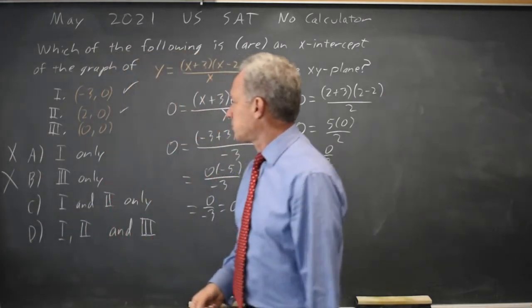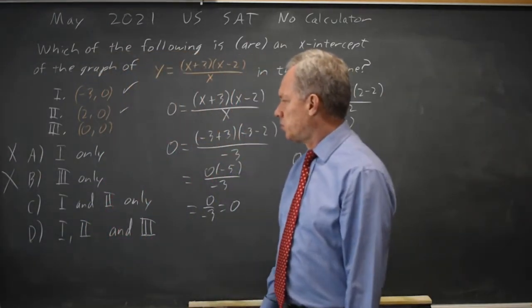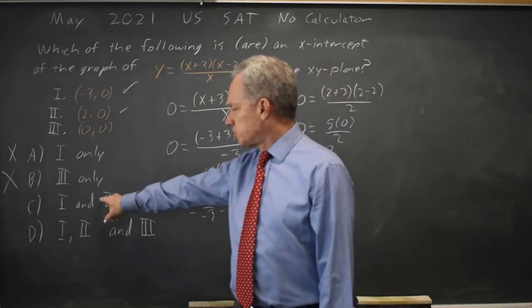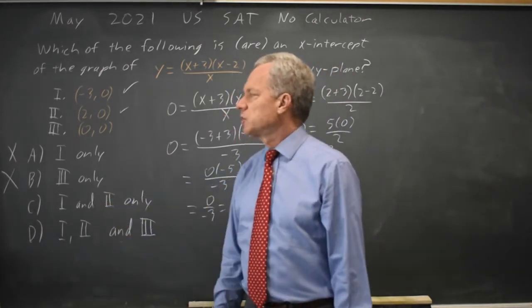Choice A cannot be correct because 1 and 2 both work. So it's either choice C, 1 and 2 only, or choice D, 1, 2, and 3.